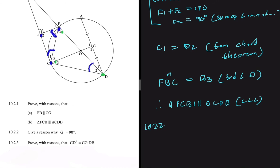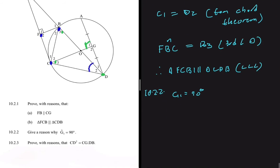Question 10.2.2 also asks: give a reason why G1 equals 90 degrees. Let's look at where G1 is located — it's right here. The reason is Theorem 1: a line from the center to the midpoint of a chord is perpendicular to the chord. Because it is perpendicular to the chord, G1 equals 90 degrees — just like G2 — and that is Theorem 1.